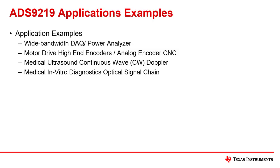This dual-channel ADC can be used in a variety of applications including automated test equipment where digital control loops are used, motor drives where encoders are used, and medical applications that require high speed and a wide bandwidth while maintaining high precision measurements.